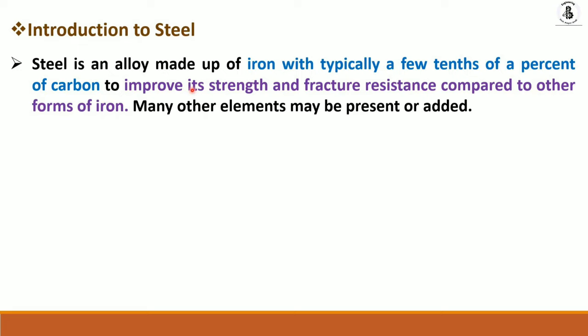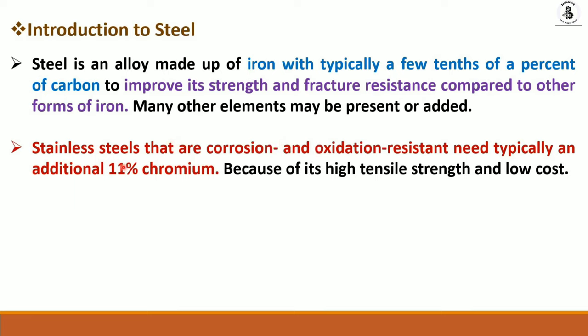Standard steels that are corrosion and oxidation resistant typically need an additional 11% chromium. Most steels contain chromium and nickel, with chromium up to 12% present, giving corrosion resistance. This is required in food industries, pharmaceutical industries, and many more applications where chromium along with nickel plays a vital role in producing anti-corroded steel material.